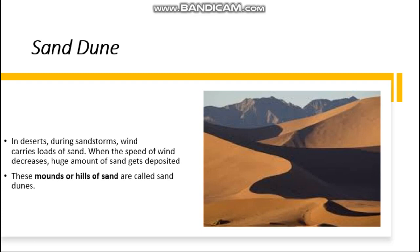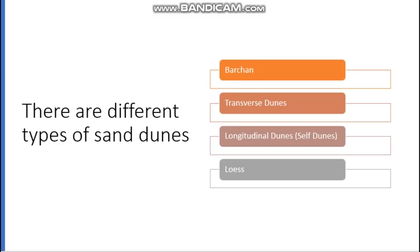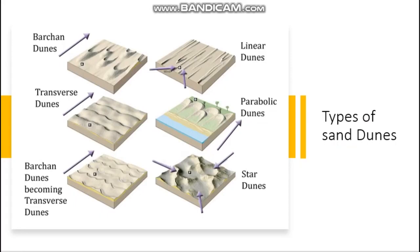Sand dunes are mostly seen in the desert region. When the speed of wind decreases, huge amounts of sand get deposited in one particular place. These mounds of sand are called sand dunes. There are different types of sand dunes: barchan, transverse dunes, longitudinal dunes, and loess. From this we can understand barchan dunes and transverse dunes among the different types.